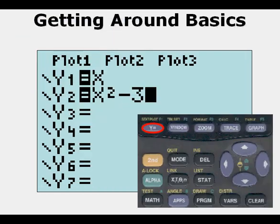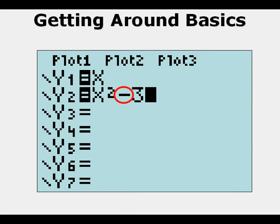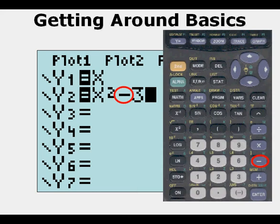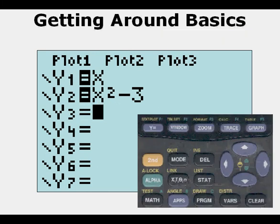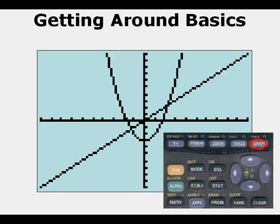If we go back to Y= we can enter in y2 a second function. In this case I entered x squared minus 3, and I used the minus sign, which is not to be confused with the negative sign. Here I've entered the negative sign in y3, and it's a shorter symbol so it's higher placed than the minus sign. It's a crucial difference. We can graph these two equations simultaneously and we see them both here.